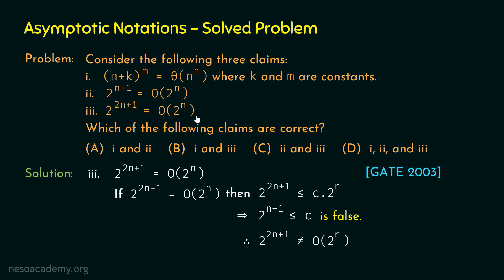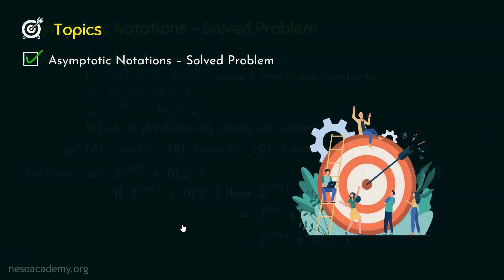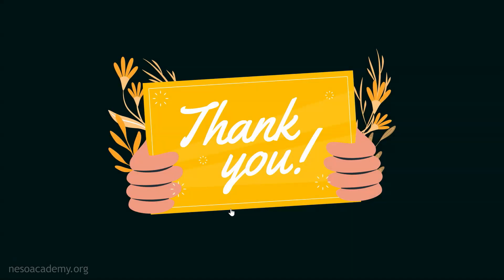Since claims 1 and 2 are correct but claim 3 is false, option A is the correct answer. With this, I hope it is clear how to solve these types of problems. We are done with this topic and this lecture. Thank you for watching, and I will see you in the next one.